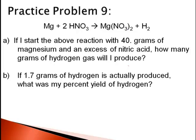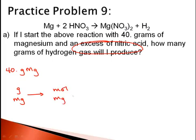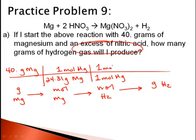If I start the above reaction with 40 grams of magnesium and an excess of nitric acid, how many grams of hydrogen gas will I produce? If I actually produce 1.7 grams of hydrogen, what's my percent yield? I'm already told what the limiting reactant is because I have an excess of nitric acid. So I start with 40 grams of magnesium and go from mass of magnesium to moles of magnesium using molar mass, then to moles of hydrogen, and then to mass of hydrogen using molar mass. The molar mass of magnesium is 24.31 grams per mole, and from the balanced equation I have 1 mole of magnesium and 1 mole of hydrogen.